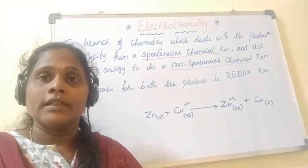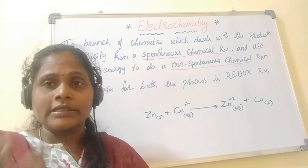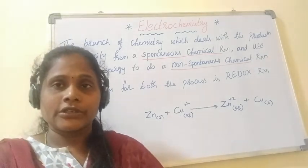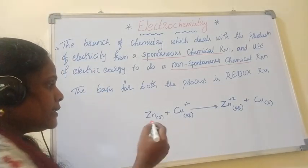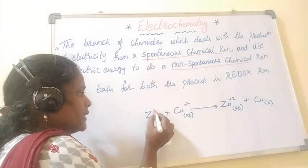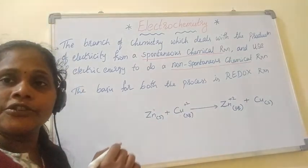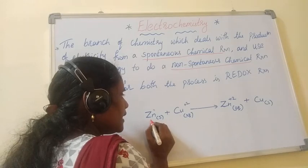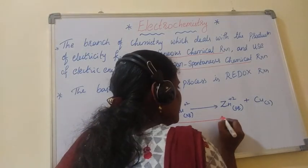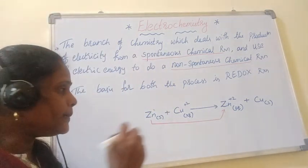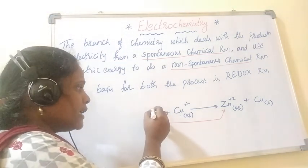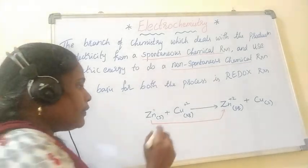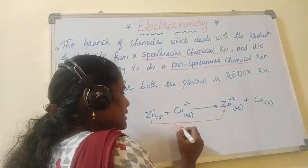What is a redox reaction? The reaction in which oxidation and reduction happen simultaneously is called a redox reaction. Here is an example: zinc in its solid state has an oxidation number of 0, and it is converting into zinc²⁺, meaning it is losing its electrons and its oxidation number is increasing to +2. Therefore, this process is called oxidation.